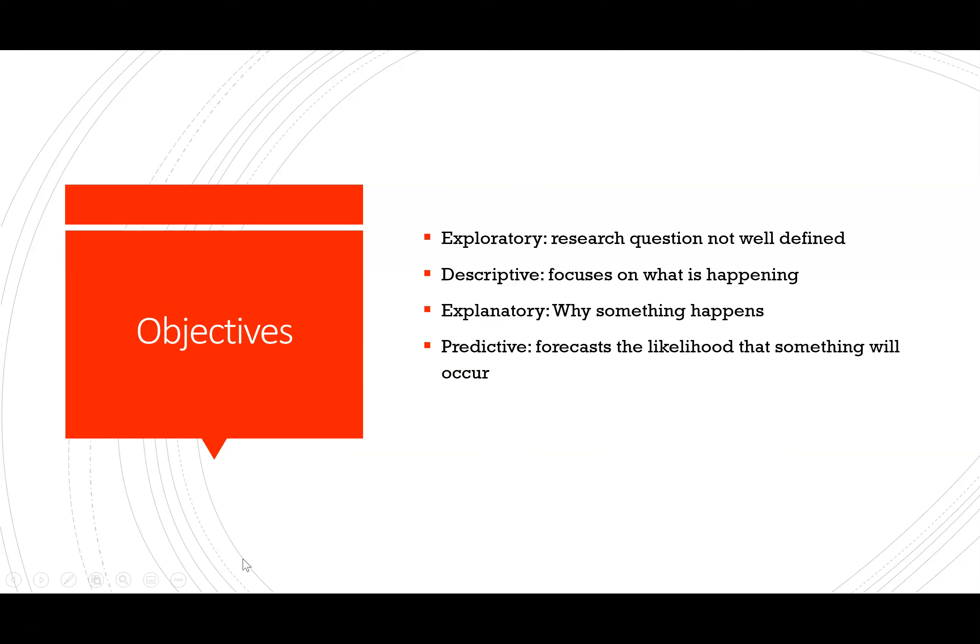We need to know the objective of our research. There are four broad categories: exploratory, where we don't necessarily have a well-defined research question and are trying to see what's out there; descriptive, focusing on what's happening within a situation; explanatory, looking at why that situation is happening; and predictive, where we're trying to forecast the likelihood that something will happen.